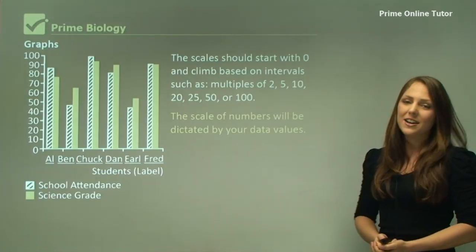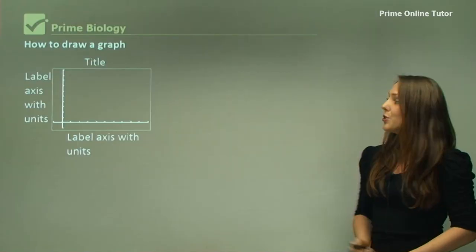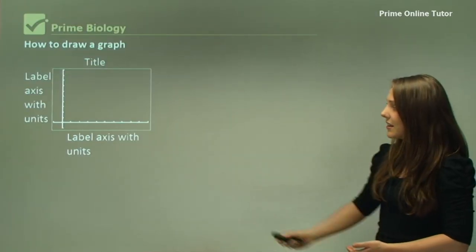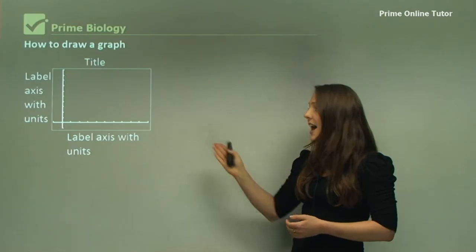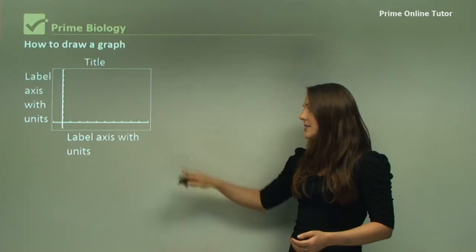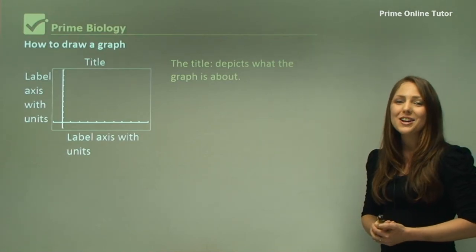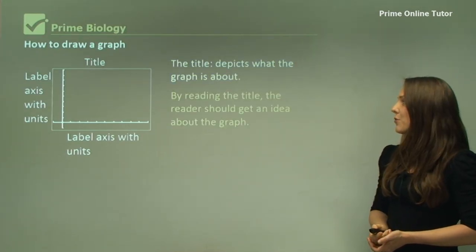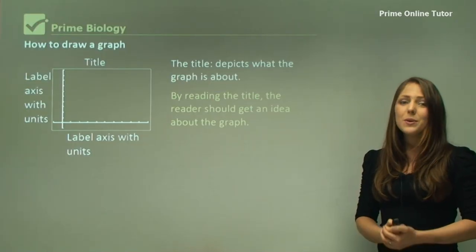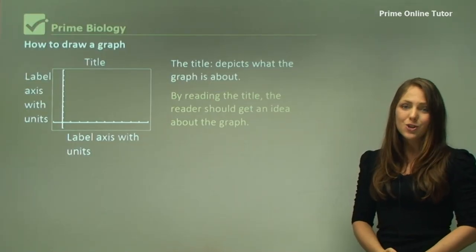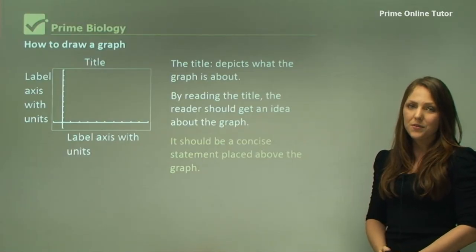How to draw a graph: You need your title, and a label on the y-axis, which is the vertical axis, and the x-axis, which is the bottom horizontal axis. The title depicts what the graph is about. By reading the title, the reader should get an idea about what the graph is showing. It should be a concise statement placed on top of the graph.